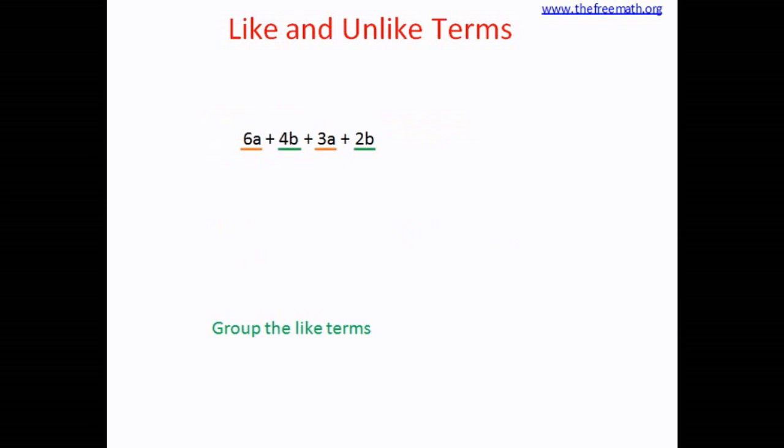How do we group the terms? We can add the coefficients or subtract and group the terms. That means only the coefficients can be added or subtracted. So if I group 6a and 3a, I would get 6a plus 3a which is equal to 9a. And 4b plus 2b gives me 6b. So this expression equals 9a plus 6b.